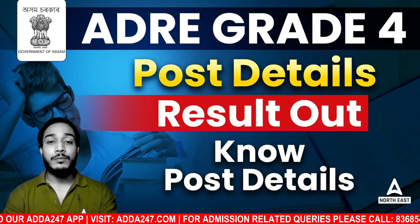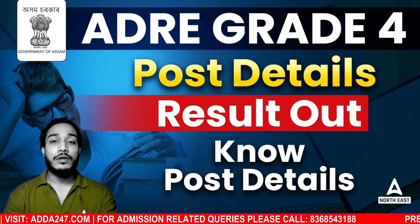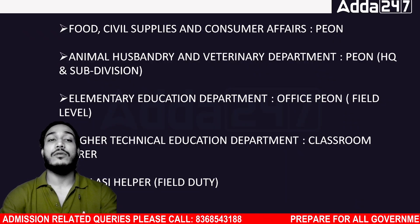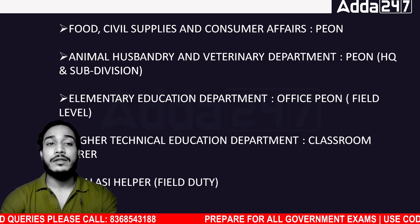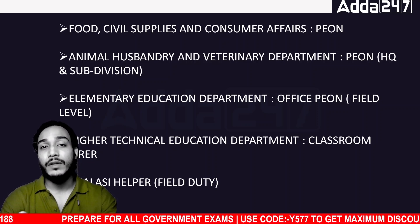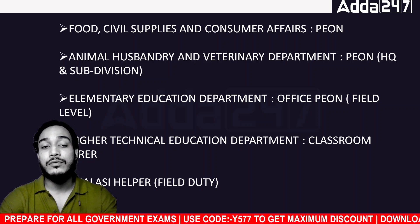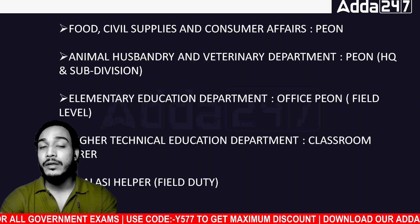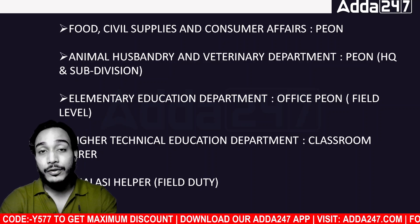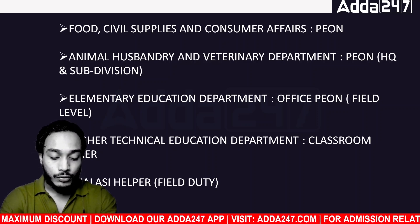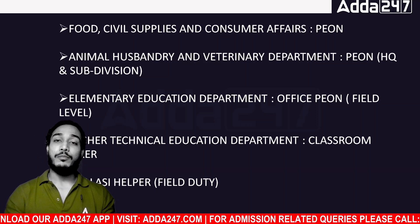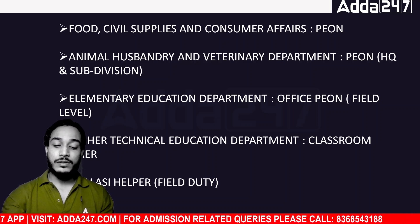We are going to talk about the posts available. Under Civil Supplies and Consumer Affairs, we have a peon, a helper, a bearer, a pod, a laboratory assistant, a boatman, and a helper to electrician.